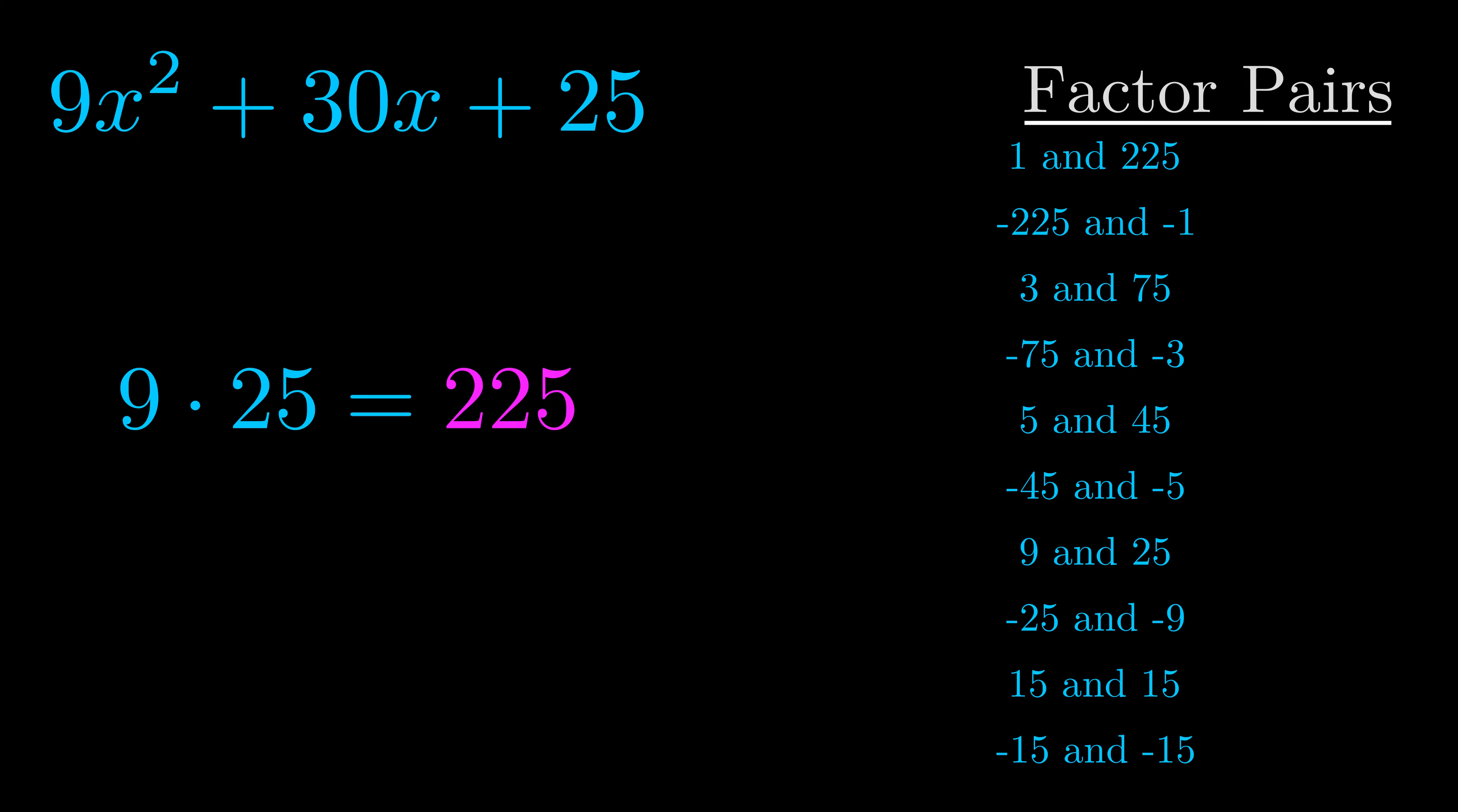The b value is the coefficient on the x term. That's the middle term, the one that we haven't done anything with yet. And really this is the only factor pair that we need.